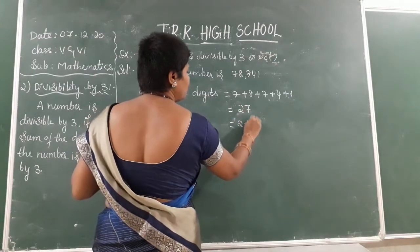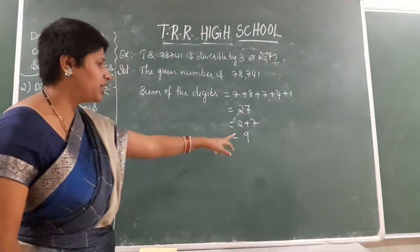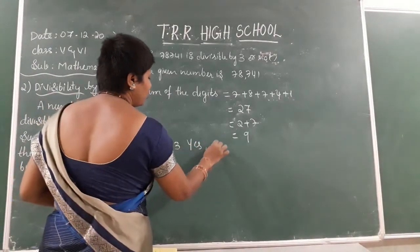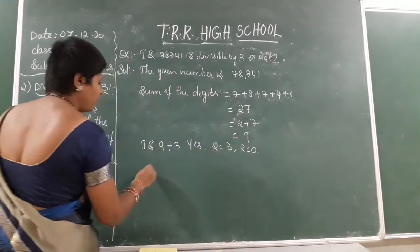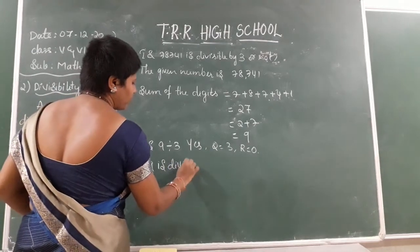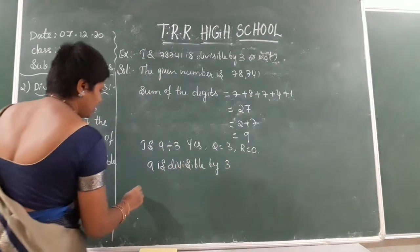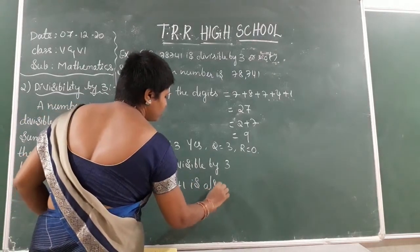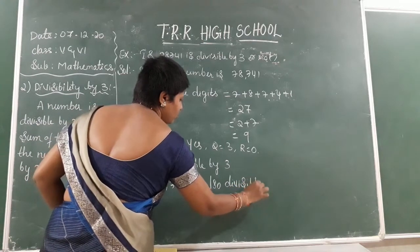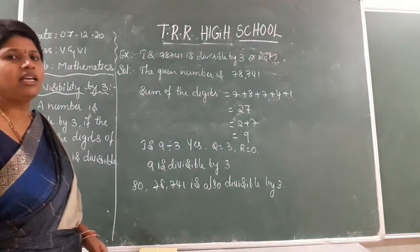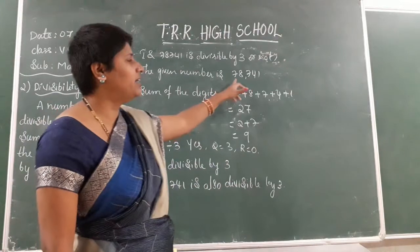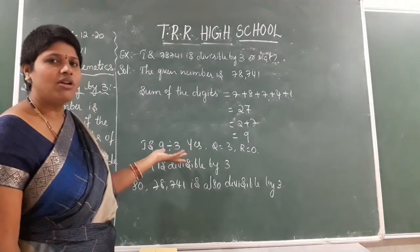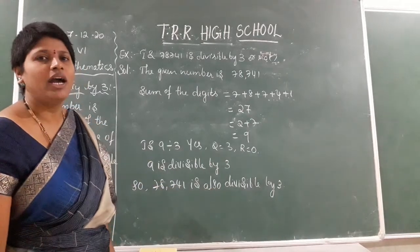Now add those digits again: 2+7=9. Is 9 divisible by 3? Yes — quotient is 3, remainder is 0. So when 9 is divisible by 3, the entire number 78741 is also divisible by 3. I am not doing any division — I simply added the given digits and checked whether the sum is divisible by 3.